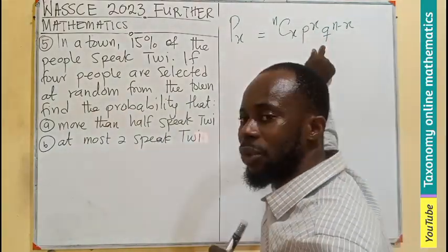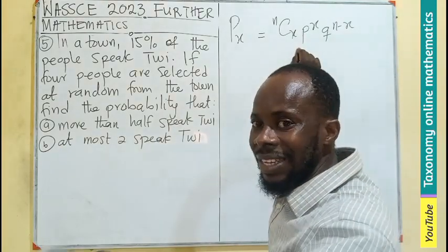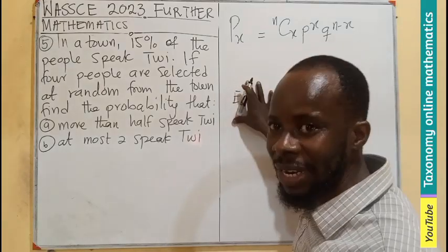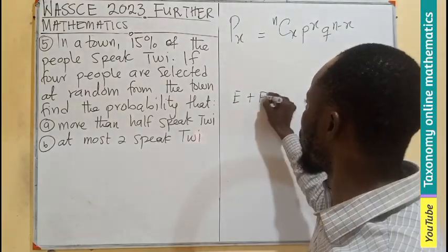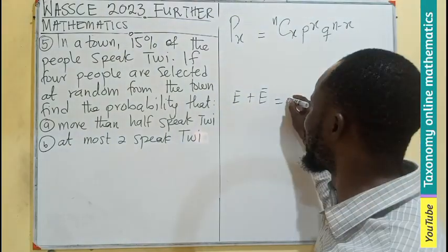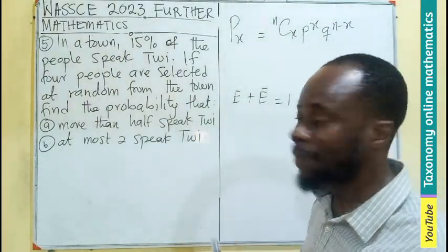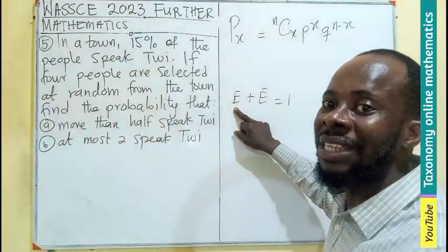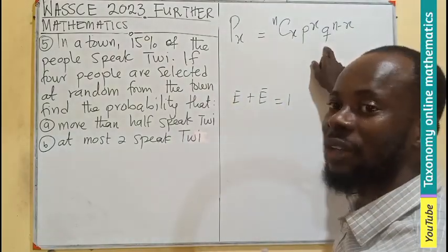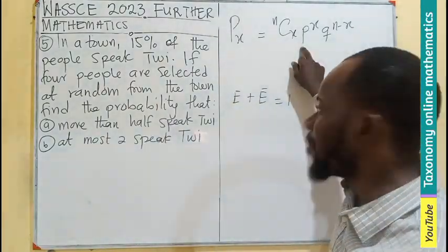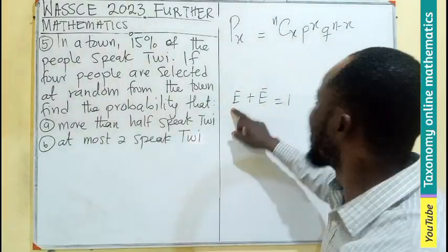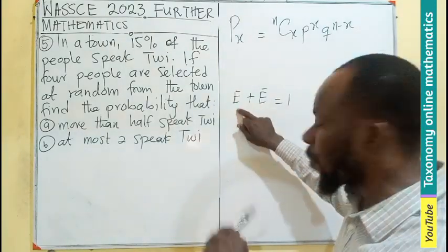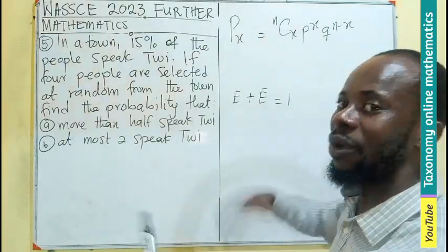Then Q is the probability of failure. We know that the probability of an event happening plus the probability of the event not happening equals 1. So if P is the success — the event occurring — then Q, which is the failure, is the probability of it not occurring.